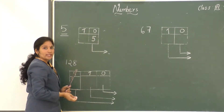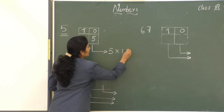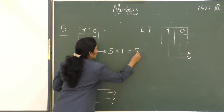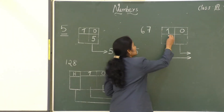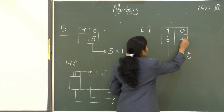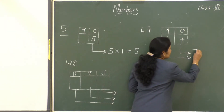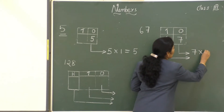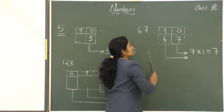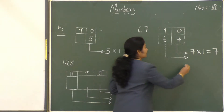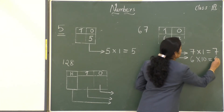The number 5, while representing in a place value chart, comes under the ones place. It means 5 times 1 is equal to 5. Take another example: 67. Here, 7 comes under the ones place — it means 7 times 1 is equal to 7. Six comes under the tens place — it means 6 times 10 is equal to 60.